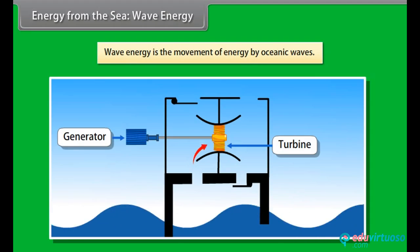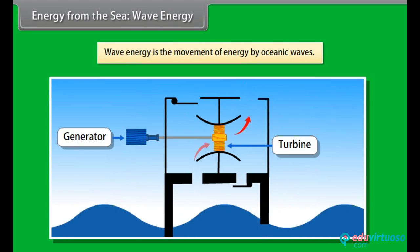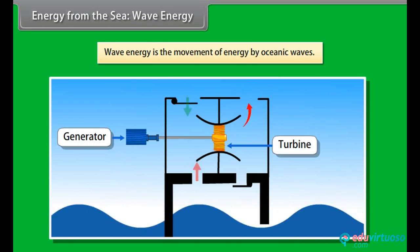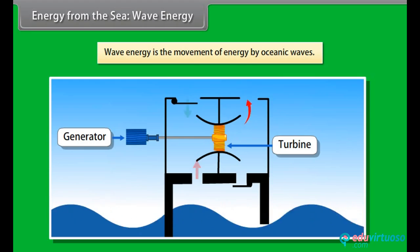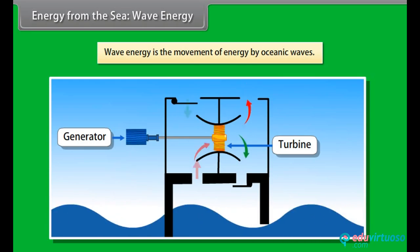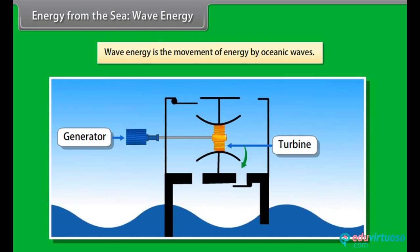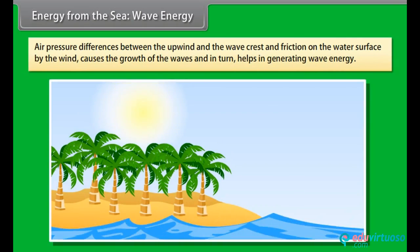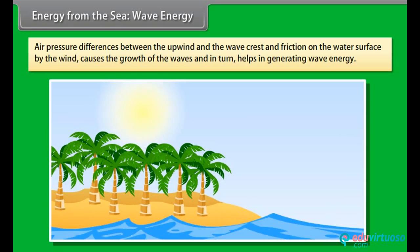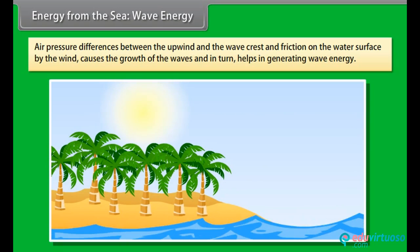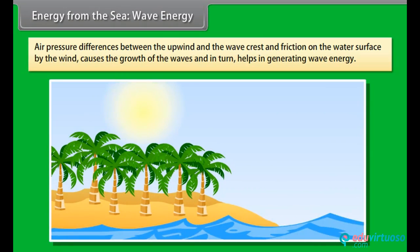Energy from the sea — Wave energy. Wave energy is the generation of energy by oceanic waves. We can capture this energy to do useful work, for example electricity generation, water desalination, or the pumping of water into reservoirs. Waves are generated by wind passing over the surface of the ocean. As long as the waves move slower than the wind speed above them, there is an energy transfer from the wind to the waves. Both air pressure differences and friction on the water surface by the wind cause the water to undergo shear stress, causing the growth of waves and generating wave energy.